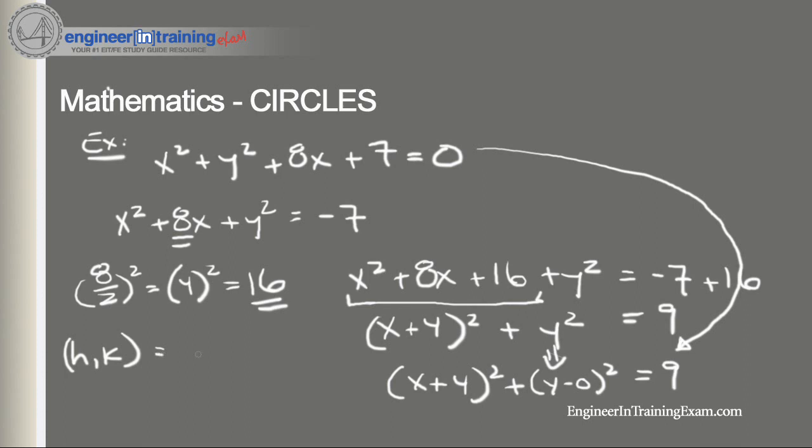So looking at this, we know that (h,k), the center of the circle, is going to be located at (-4, 0) and that the radius of the circle is the square root of 9, which is also equal to 3.